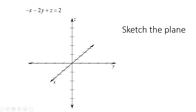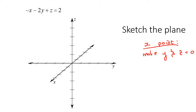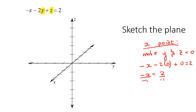So I'm going to do one more example. We need to find the x point first — we make y and z zero. So you get minus x minus two times zero plus zero equals two, giving minus x equals two. Dividing both sides by negative one, x equals negative two. This is the positive x and this is the negative x, so you mark x equals negative two.